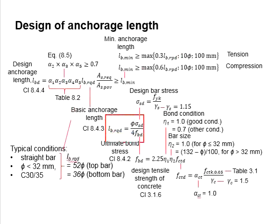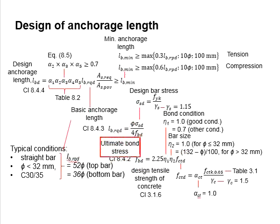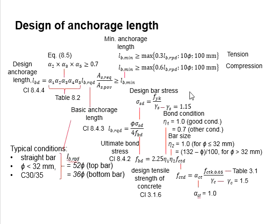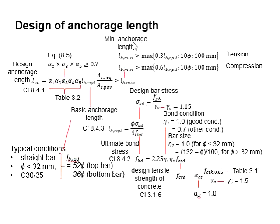Within the basic anchorage length equation, there is an ultimate bond stress. The ultimate bond stress of the reinforcement bar is governed by the design tensile strength of the concrete, calculated as a function of the characteristic tensile strength fctk, the partial factor of safety for concrete, and a coefficient for concrete under tension. The characteristic tensile strength can be obtained from Table 3.1 in Eurocode 2.